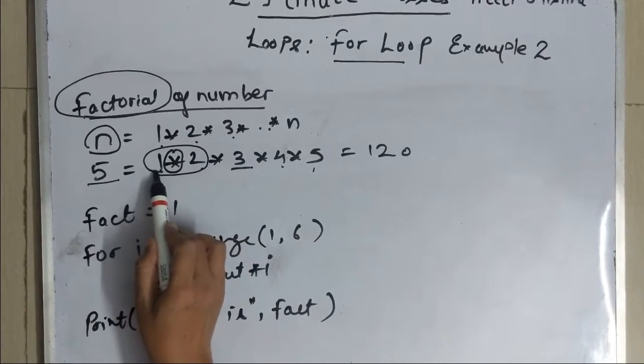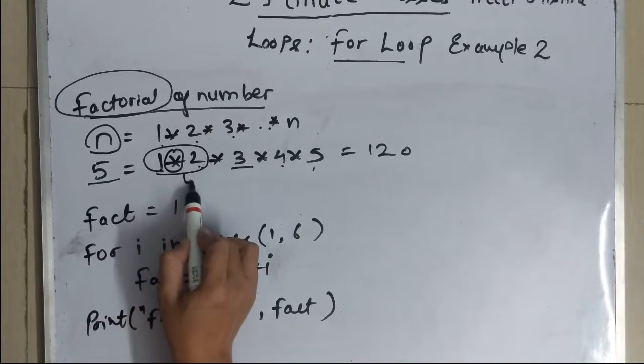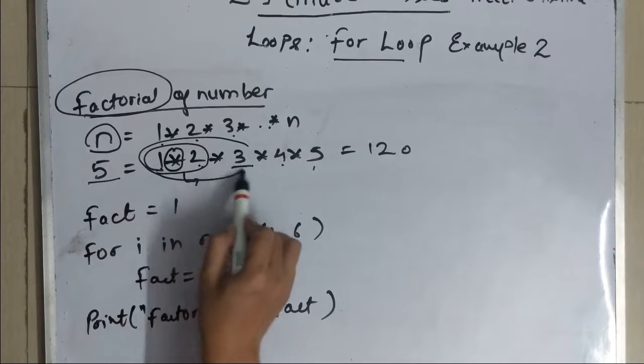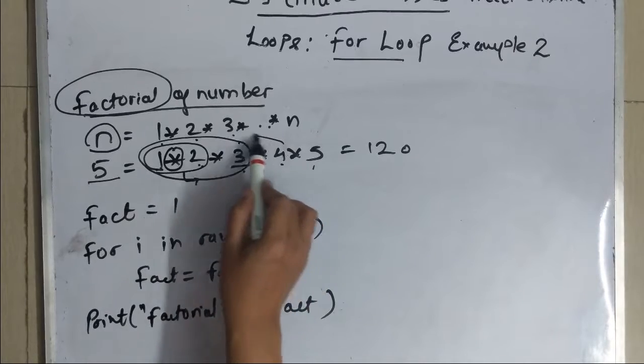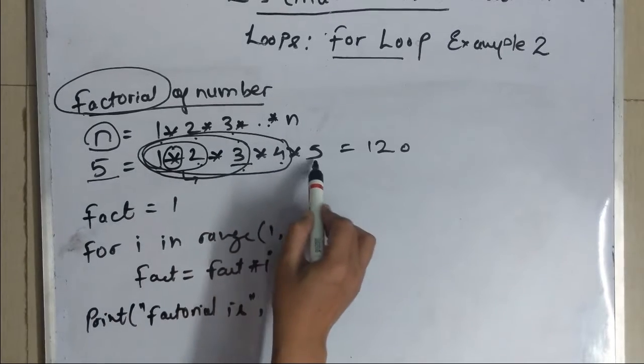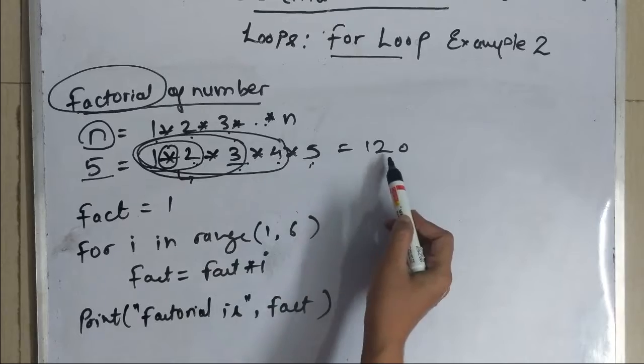I will multiply 1 with 2 then its answer will be multiplied with 3 then its answer will be multiplied with 4 then the answer which I will obtain will be multiplied by 5 then I will get my final answer.